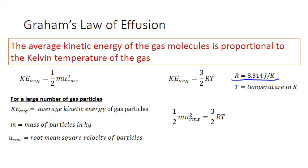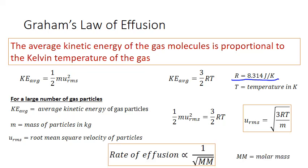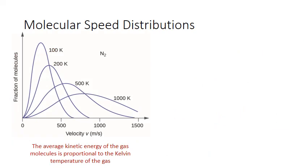Rearranging the equations, the root mean square velocity u_RMS is equal to the square root of three times the ideal gas constant times temperature in Kelvin divided by the mass of the particles, which is represented by the molar mass. This fits with our understanding of Graham's law of effusion, which states that the rate of effusion — essentially the velocity of those particles — is inversely proportional to the square root of molar mass. Temperature was also part of that equation in the numerator, giving us a direct relationship between the temperature of a gas and the average molecular velocity.